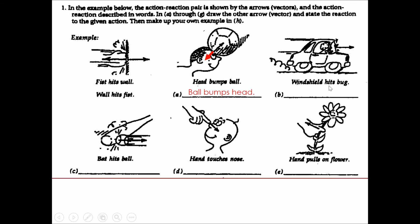The next one would be windshield hits bug. Therefore the opposite reaction would be bug hits windshield, and the arrow should be like this. Bat hits ball. Ball would hit bat. The arrow would be the opposite direction like this.